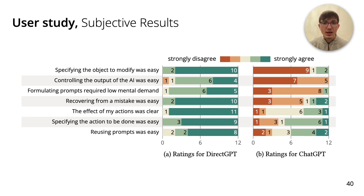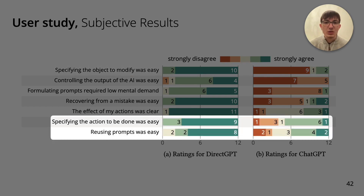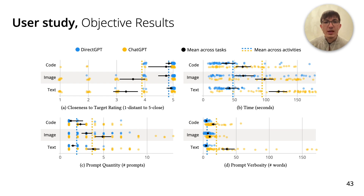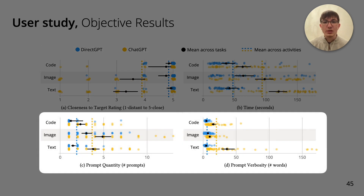In terms of subjective results, participants expressed a strong preference for DirectGPT compared to ChatGPT. For example, they all agreed that specifying the object to modify was easy with DirectGPT, but not with ChatGPT. Other results were also in favor of DirectGPT, but some participants thought it was also easy with ChatGPT — for example, half the participants thought it was easy to specify the action to be done and to reuse prompts even with ChatGPT. In terms of objective results, they were also in favor of DirectGPT. Participants were more successful in accomplishing image and text editing tasks with DirectGPT, though they were equally successful with both interfaces when editing code. They also had to enter fewer and shorter prompts using DirectGPT, whereas it took them longer and they needed more prompts with ChatGPT.